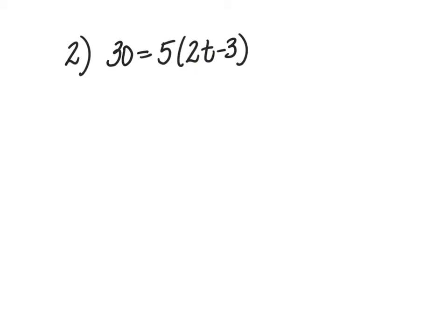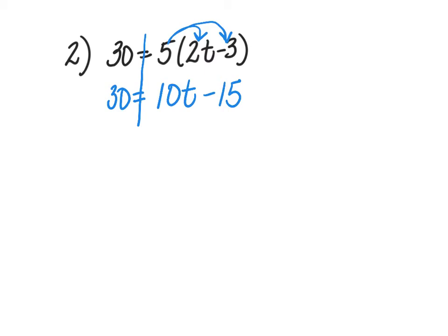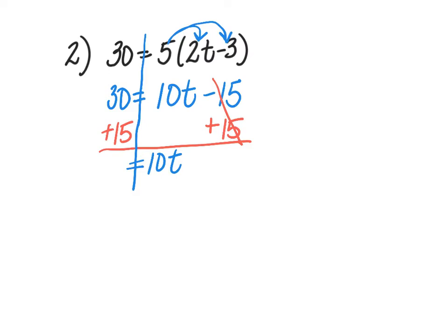Number 2 is 30 = 5(2t - 3). There's nothing to do on the left side — it's just one term. On the right side I need to remove the parentheses by distributing the 5 to both terms: 5 times 2t is 10t, and 5 times negative 3 is negative 15. Now I need to get rid of that minus 15 with my variable term, so I add 15 to both sides. The minus 15 and plus 15 cancel, leaving 10t on the right and 45 on the left.